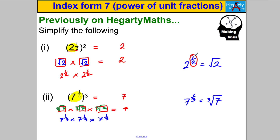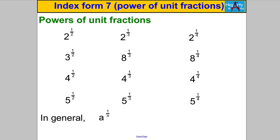Unit fractions are always of the form one over a number — like one over eight. So: two to the power of a half is the square root of two; seven to the power of a third is the cube root of seven; and eight to the power of a quarter is the fourth root of eight. We've worked out, just by using things we already know, what two to the half, or a third, or a quarter — any unit fraction power — must actually mean. Let's write this down properly: powers of unit fractions.